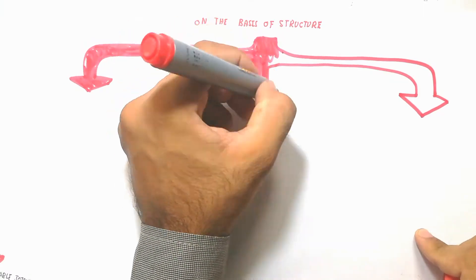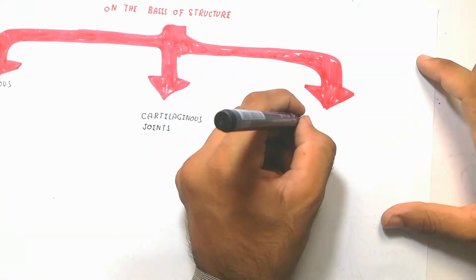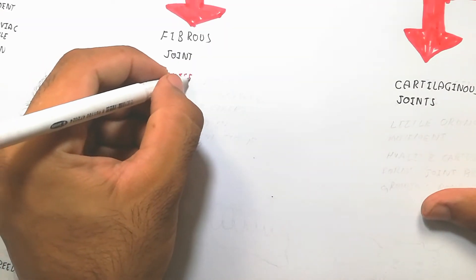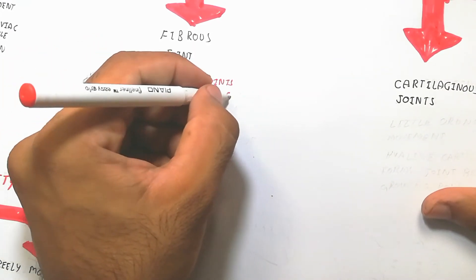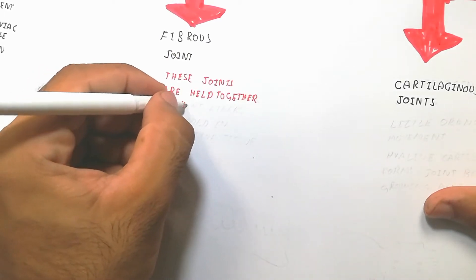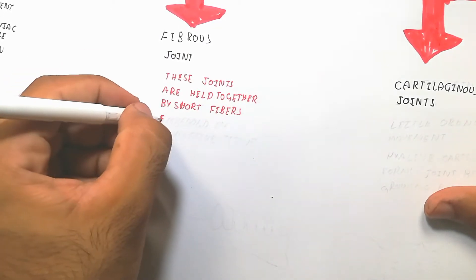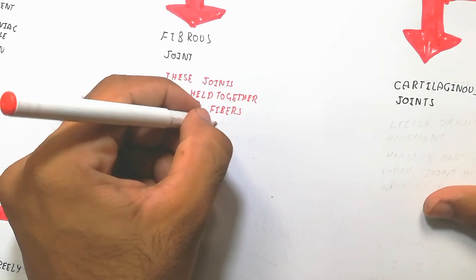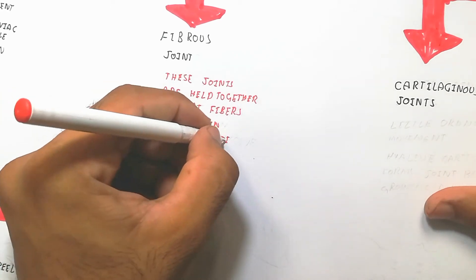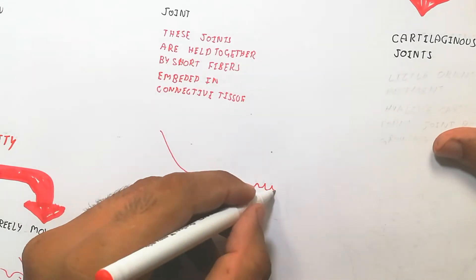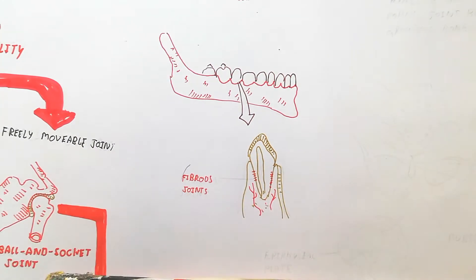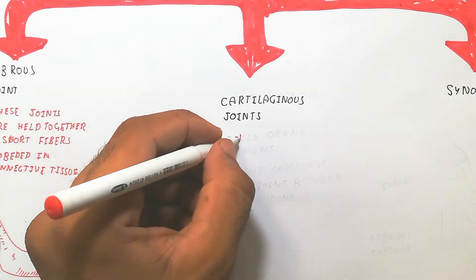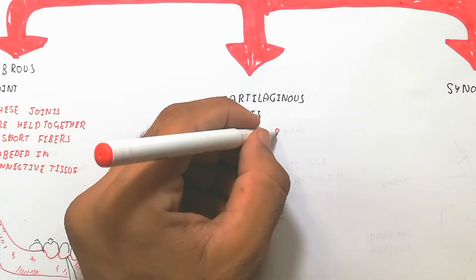Now we will talk about classification on the basis of structure. There are three types: fibrous joint, cartilaginous joint, and synovial joint. A fibrous joint means collagen fibers attach one bone to another. These joints are held together by short fibres embedded in connective tissue. For example, the teeth are attached by a fibrous joint, which is an immovable joint.